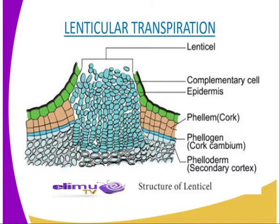The loss of water vapour through the lenticel cells is negligible, and it will be difficult to recognize transpiration through lenticels. As water evaporates from the spongy mesophyll cells into the sub-stomatal air spaces, those cells become more concentrated than the adjacent cells. This increases the osmotic pressure of the spongy mesophyll cells; as a result, water flows into these cells from surrounding cells, which in turn draws water from the xylem in the leaves — itself in continuous connection with the xylem of the stem and of the root.